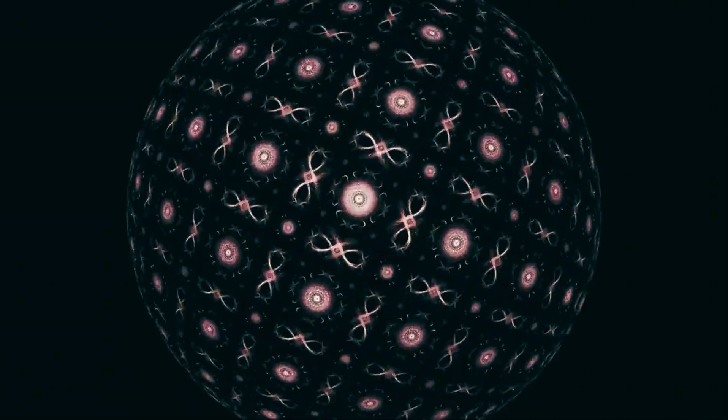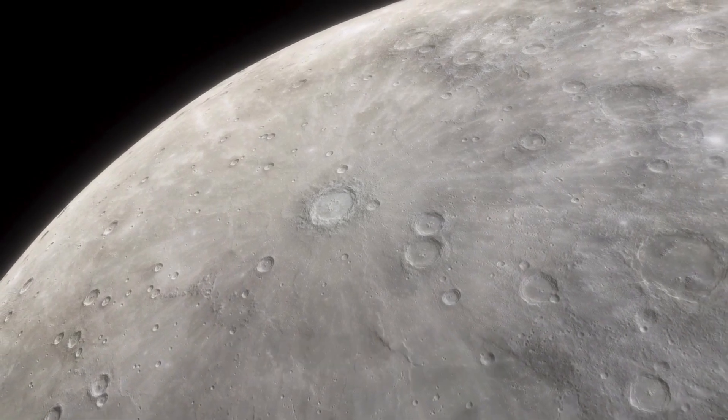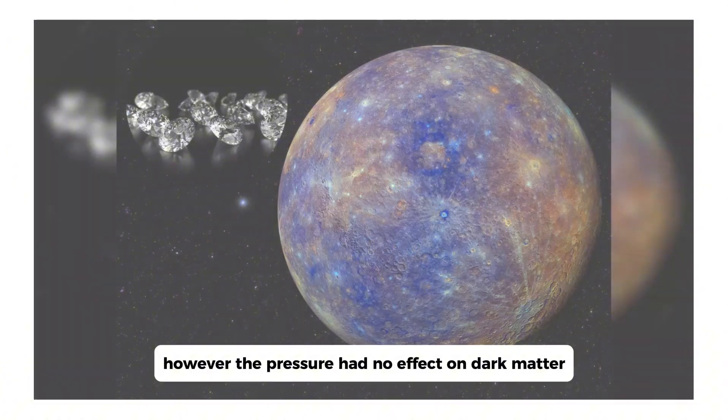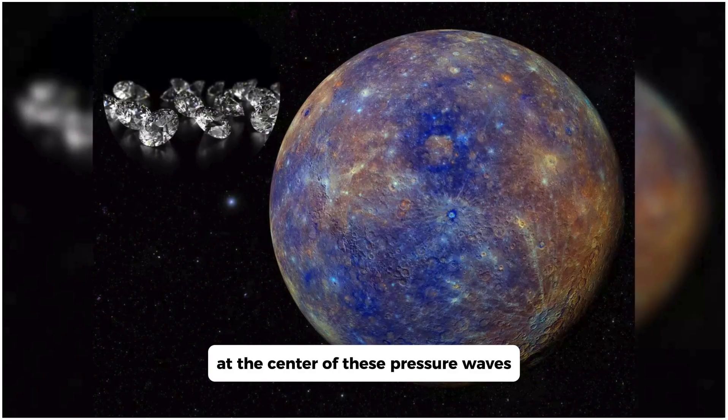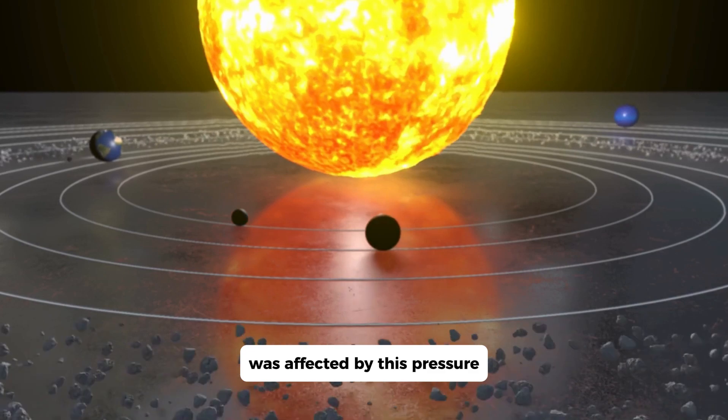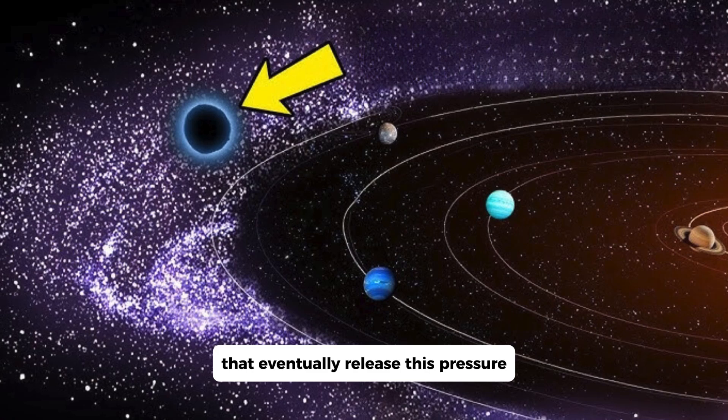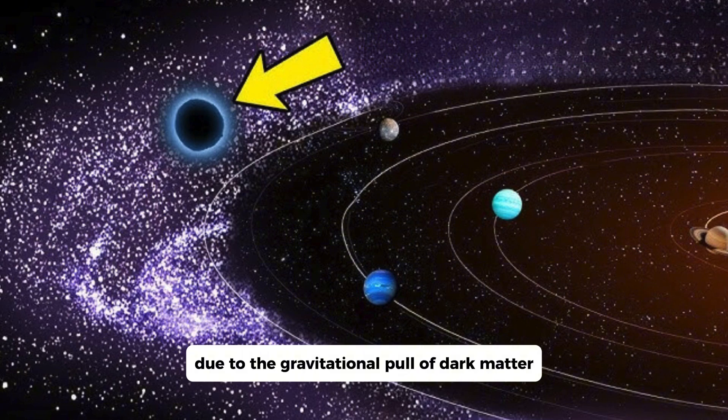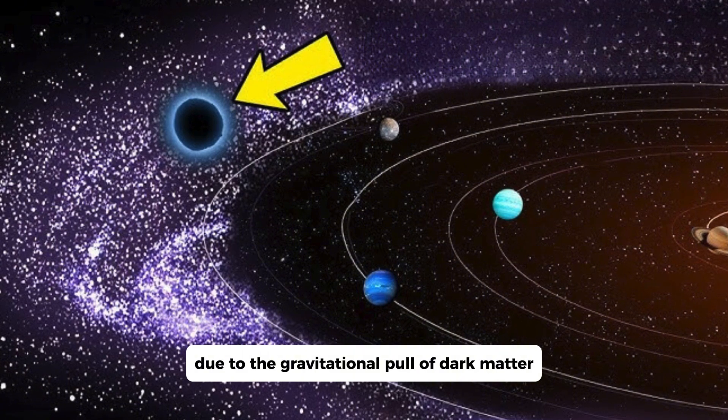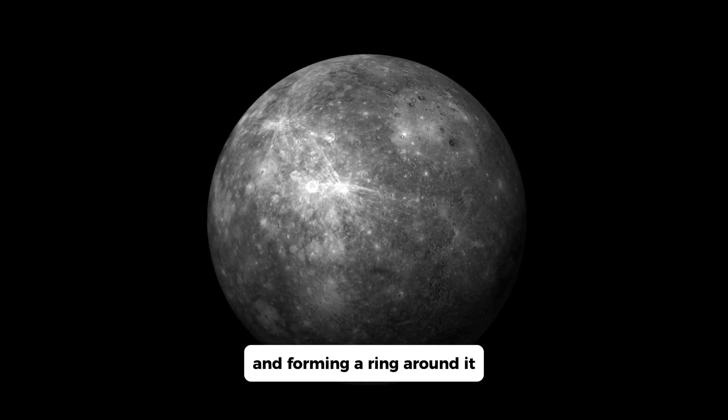To put it simply, both ordinary matter and dark matter played a role in creating these pressure waves. However, the pressure had no effect on dark matter, which interacts only through gravity and remains stationary at the center of these pressure waves. Ordinary matter, on the other hand, was affected by this pressure, leading to a process called photon decoupling that eventually released this pressure. This release caused ordinary matter to be pushed out of the pressure waves due to the gravitational pull of dark matter, resulting in a bullseye-like pattern with matter concentrated in the center and forming a ring around it.